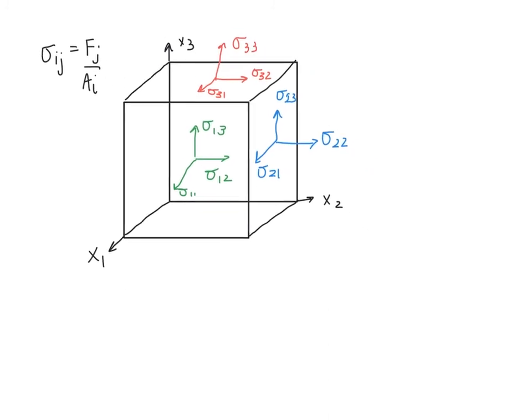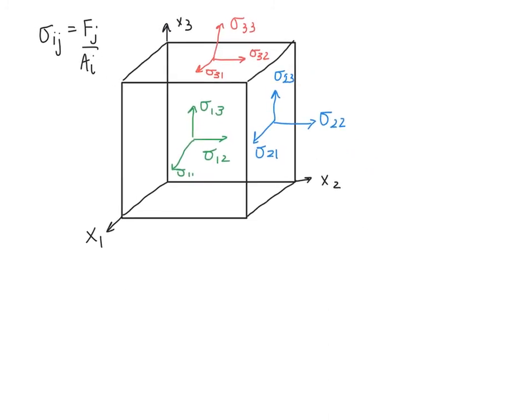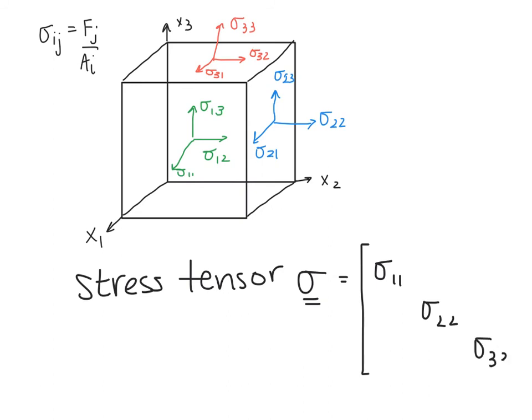We can now take these components of stress and define what is called the stress tensor. So, the stress tensor is sometimes defined with a double underline and this just collects these stress values together. Along the diagonal are the normal stresses and then the off-diagonal terms represent the shear stresses.